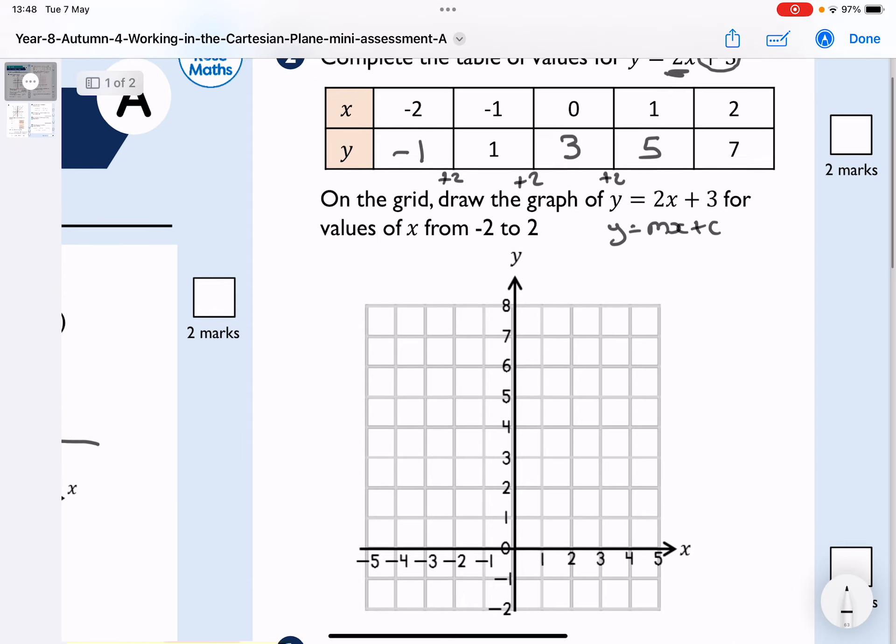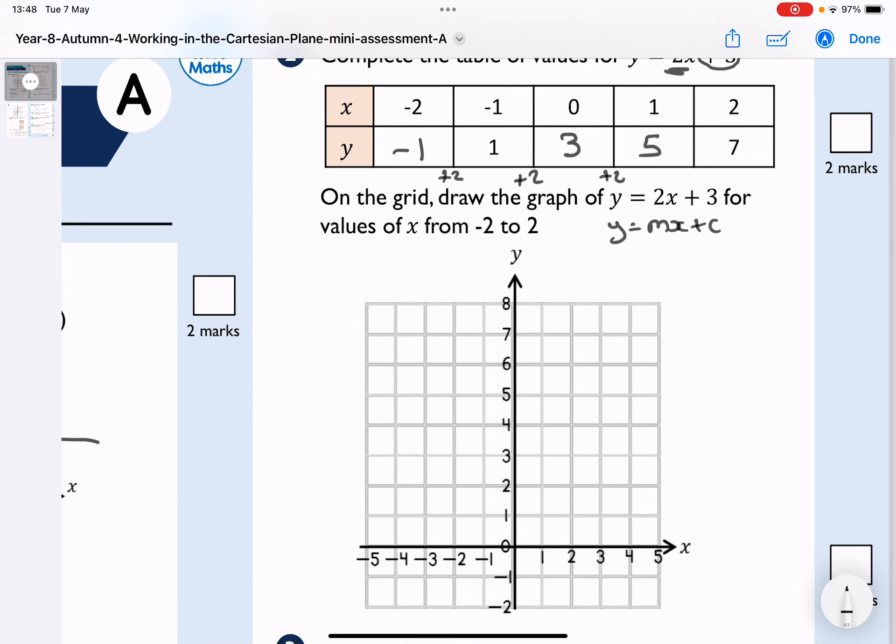What I then want to do is to draw those points, put those points in. At negative 2, I'm going to negative 1. Remember, it's x, then y.